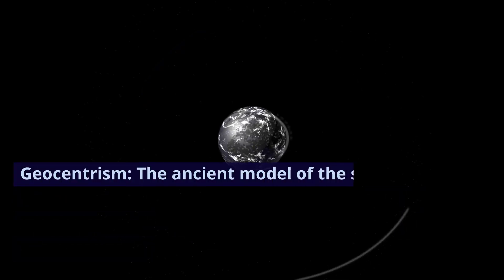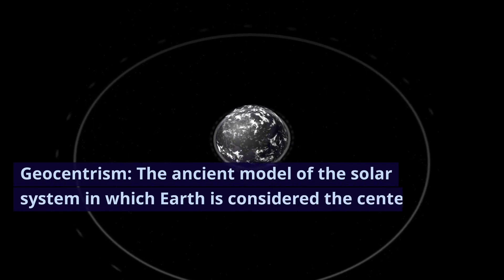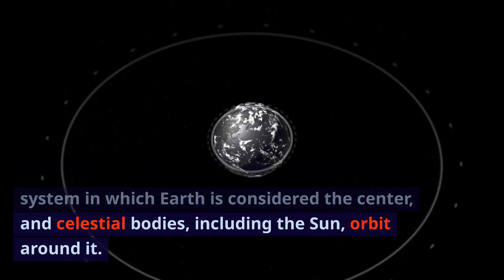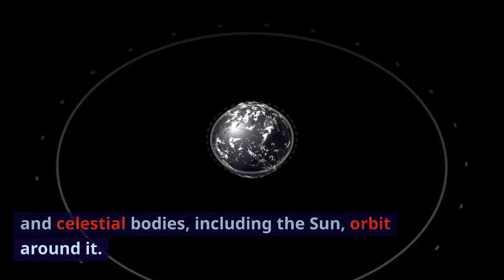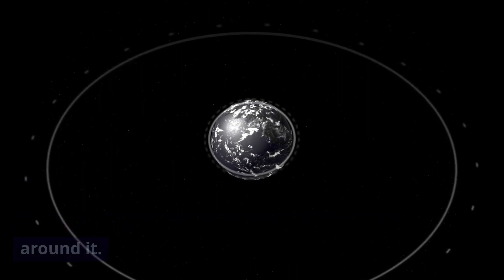Geocentrism: the ancient model of the solar system in which Earth is considered the center, and celestial bodies, including the Sun, orbit around it.